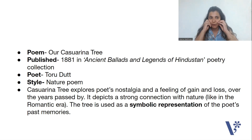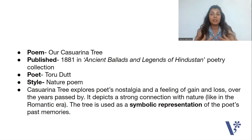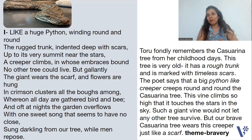That is why this casuarina tree is so much connected to her — because under this tree she played with her brother and sister. This tree was there during her childhood in Kolkata, and she was spending her youth there. So this poem depicts a strong connection with nature, just like the poems of the Romantic era. And this casuarina tree is depicted as a symbolic representation of the poet's past memories. With this, we are in a good position to begin.